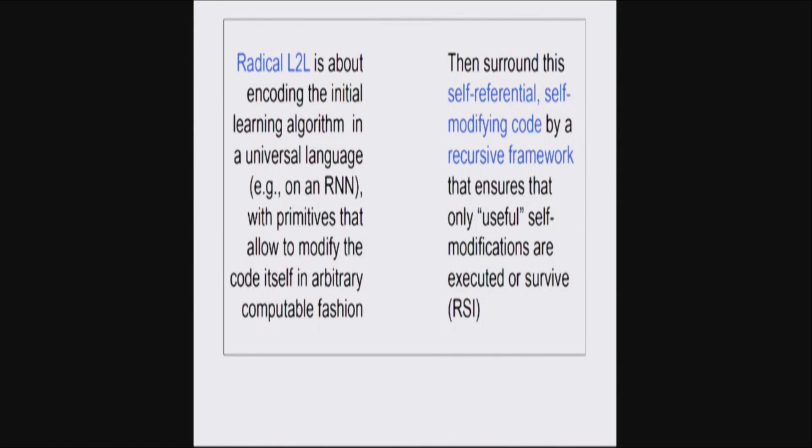Radical learning to learn is really about closing the loop. As you have a universal computer that allows for computing arbitrary learning algorithms, you want to make it self-referential such that the system has an opportunity to inspect its own learning algorithm and make it better and without any limits.